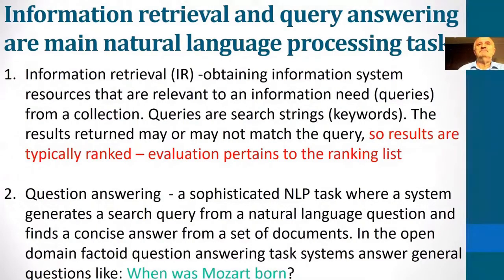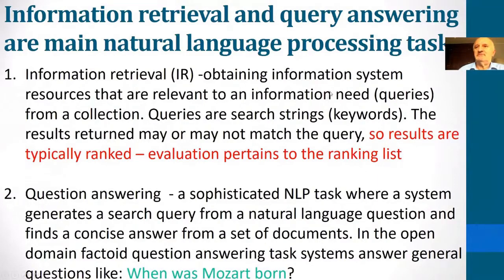There is a significant difference between these two tasks. Mainly, in query answering the query is a sentence, so it constitutes a sequence of words. Whereas in typical information retrieval, queries are in the form of keywords — a bag of words. And that excludes some sequence processing in neural networks.